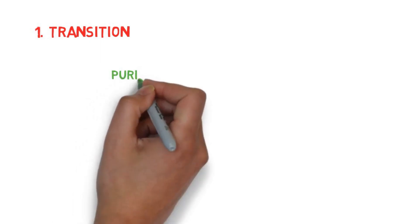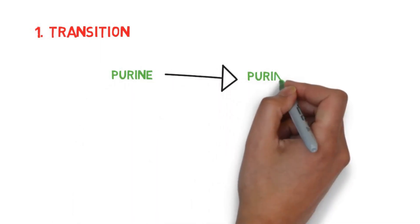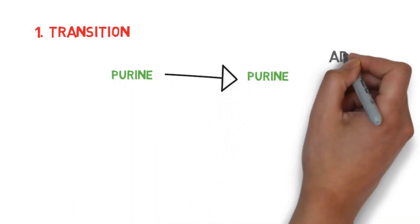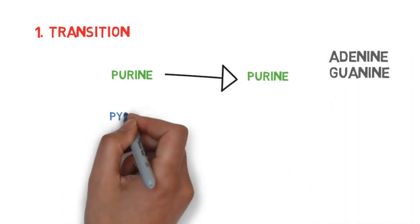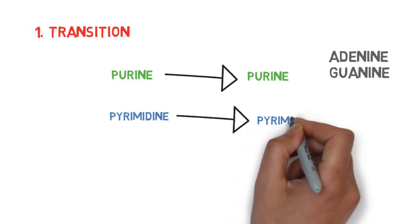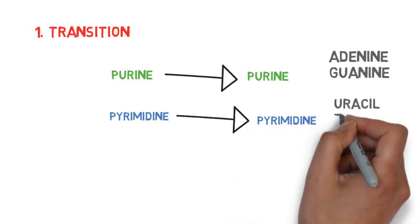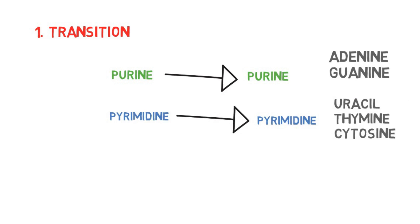In transition, purines are replaced by purines. Purines include adenine and guanine. And pyrimidines are replaced by pyrimidines. Pyrimidines include uracil, thymine, and cytosine. In short, in transition, purines are replaced by purines and pyrimidines are replaced by pyrimidines.